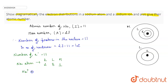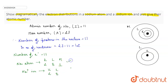The sodium ion is formed from the sodium atom by loss of an electron. The electronic configuration of the sodium ion is: in the K shell there are two electrons, and in the L shell there are eight electrons. This is the electronic configuration of the sodium atom and this is the electronic configuration of the sodium ion. However, the number of protons and neutrons remain the same.